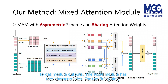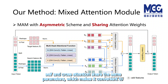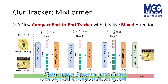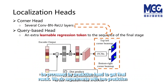The MAM module has two key characteristics. First, we design asymmetric attention to speed up our method for online tracking. Second, self-attention and cross-attention share the same parameters, making it convenient to use pretrained transformer networks. We build an end-to-end tracker with iterative mixed attention modules. A patch embedding layer is placed at the front of each stage, and the outputs of the last stage are processed by a prediction head to get the final result. We experiment with two prediction heads.